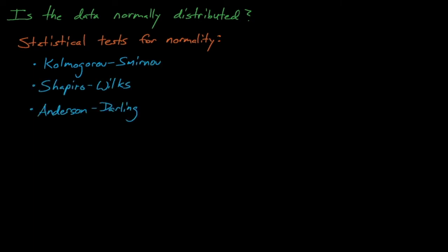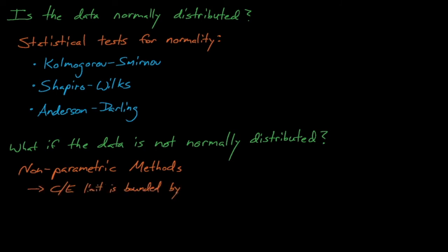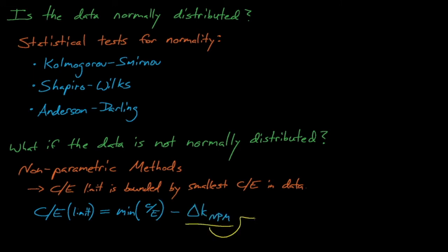So what if we apply these tests and find out that our data is not normally distributed? One alternative is to use a non-parametric method, which does not assume that our data follows any given distribution. Rather than trying to compute the 95% probability that a c over e will be above some limiting point, another option is to assume that our c over e is bounded by the smallest c over e available in our benchmark data. With enough benchmark data points this will certainly be true. However, our lowest c over e might not be a reasonable lower limit if we don't have enough benchmark data points, in which case we'll want to subtract some additional margin, delta k npm, or non-parametric method.